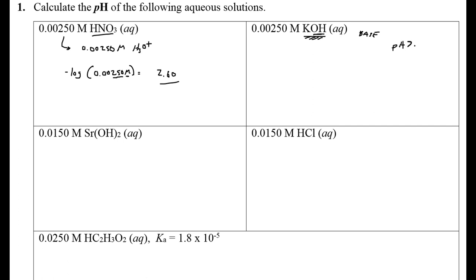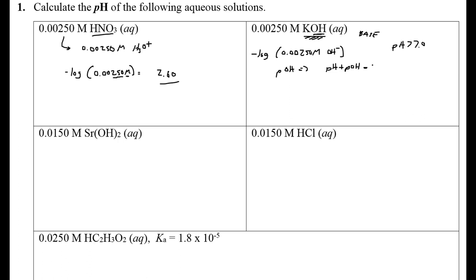So if we know this is a base, then the pH should be above 7, which is neutral. And so when you get a final answer, please just take the time to do a reality check — you've got to check yourself before you wreck yourself, as Ice Cube would say. So we're going to do negative log, but in this case this is a strong base, and we're going to get 0.00250 molar. But remember, this is not molarity of H₃O⁺ or H⁺. This is molarity of the hydroxide concentration. So we're actually calculating pOH here.